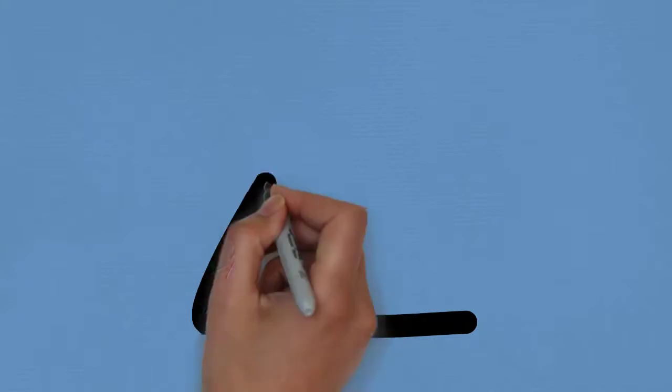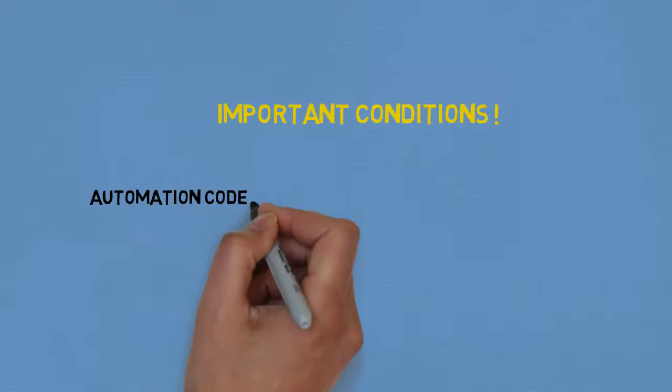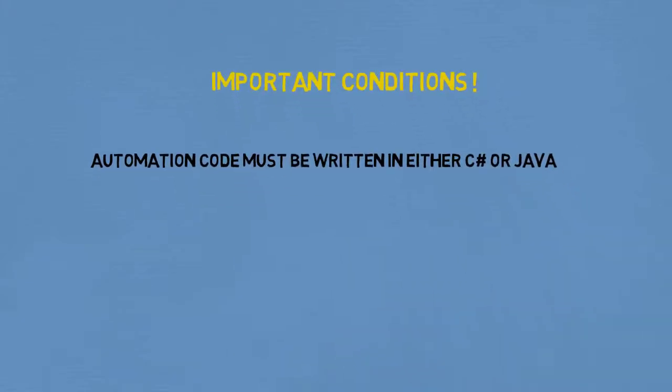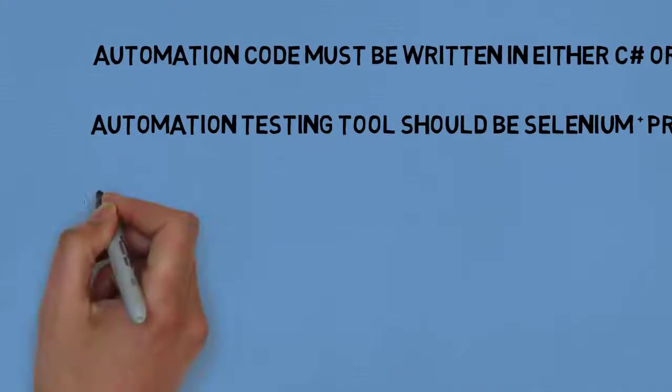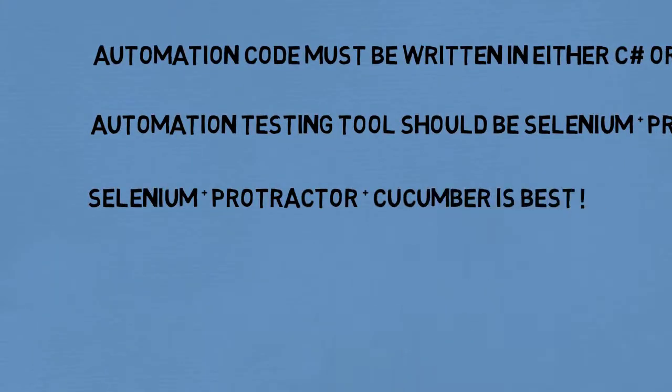But we have a few important conditions for the contest as well. They are not very hard. The important conditions are this: the automation code must be written in either C-sharp or Java language, and the automation testing tools should be Selenium plus Protractor. If you know Cucumber, which is also great.